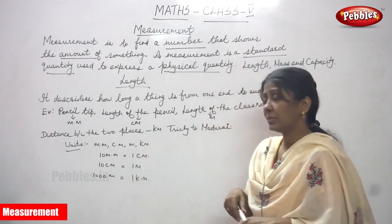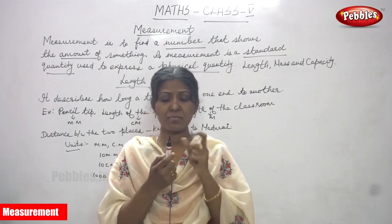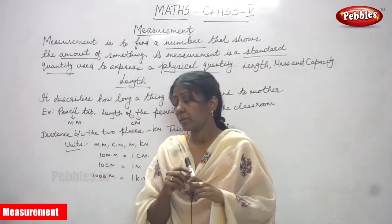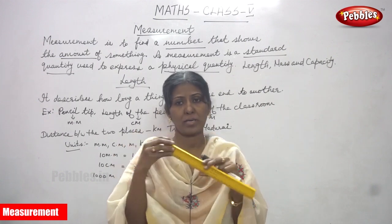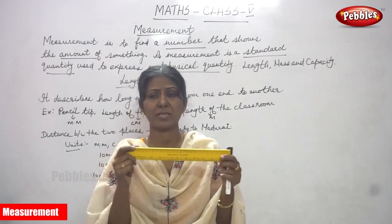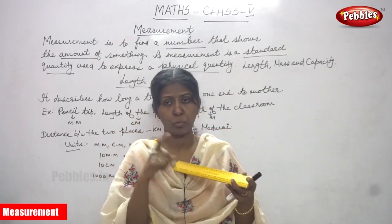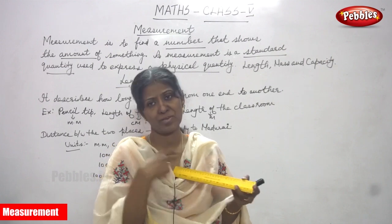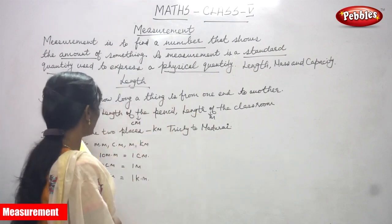For example, look at this marker. The marker tip is measured in millimeters. The marker itself is measured in centimeters. Now look at the scale — this one goes one centimeter, two centimeters, and has 30 centimeters in total. That 30 centimeters is called one foot. Each unit on this scale measures in centimeters.